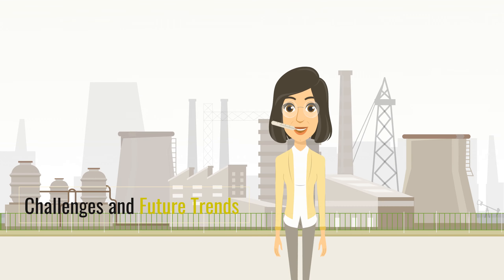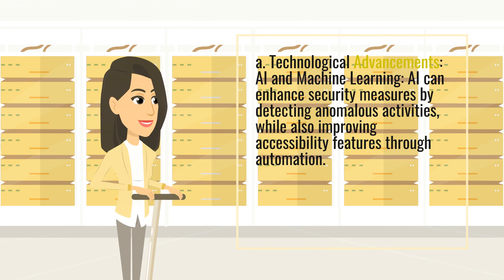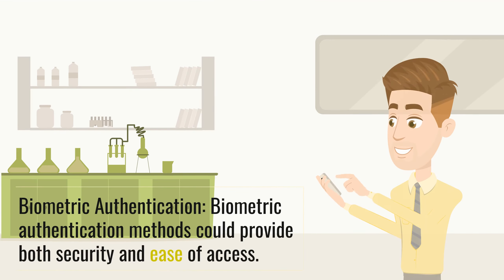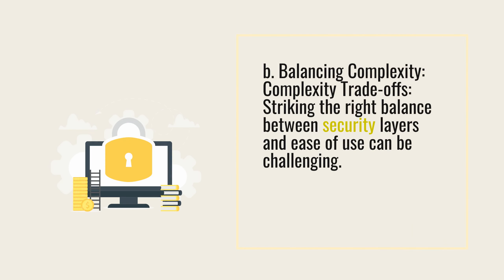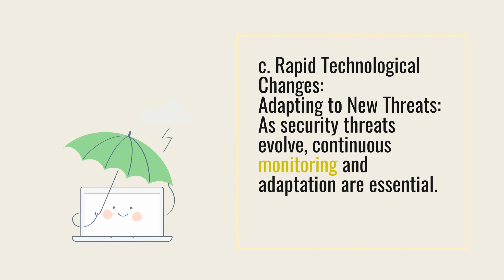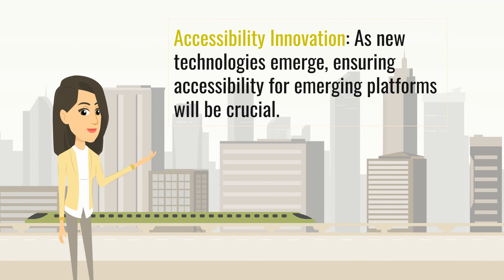Challenges and future trends. A. Technological advancements. AI and machine learning can enhance security measures by detecting anomalous activities, while also improving accessibility features through automation. Biometric authentication methods could provide both security and ease of access. B. Balancing complexity. Complexity trade-offs: striking the right balance between security layers and ease of use can be challenging. C. Rapid technological changes. Adapting to new threats: as security threats evolve, continuous monitoring and adaptation are essential. Accessibility innovation: as new technologies emerge, ensuring accessibility for emerging platforms will be crucial.